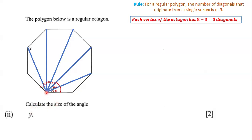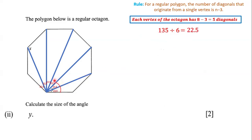We know that this entire angle is an interior angle, and we know that the interior angle measures 135 degrees. What we need to do is figure out the size of the little spaces here. In order to do that, we're going to take 135 and divide it by 6, because there are 6 spaces. So 135 divided by 6 gives us 22.5, and each one of these little spaces measures 22.5 degrees.